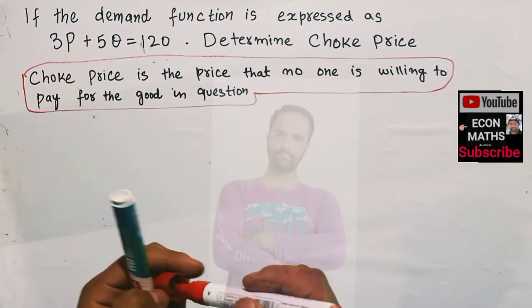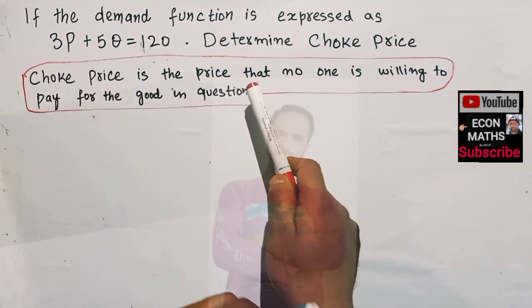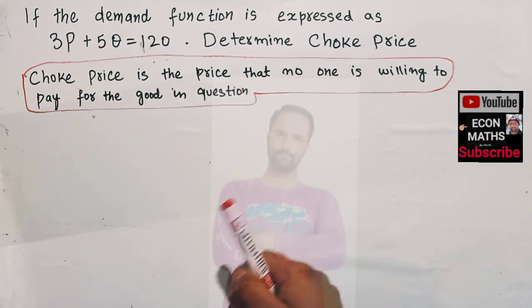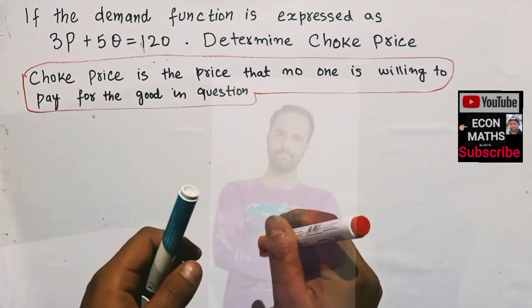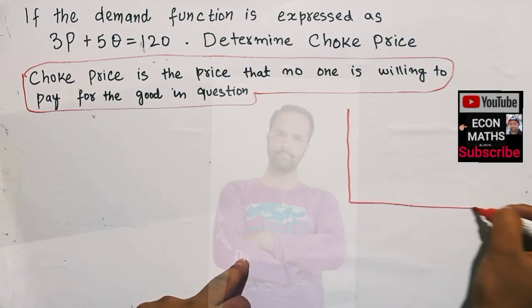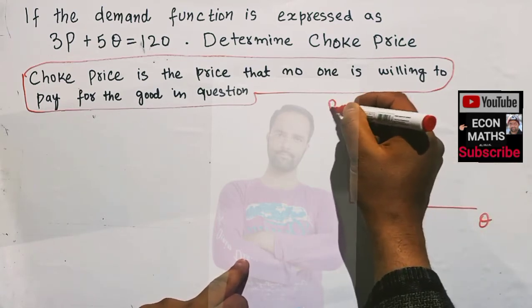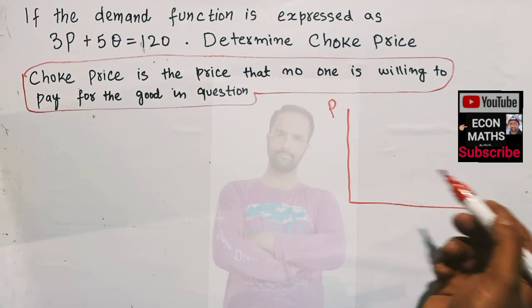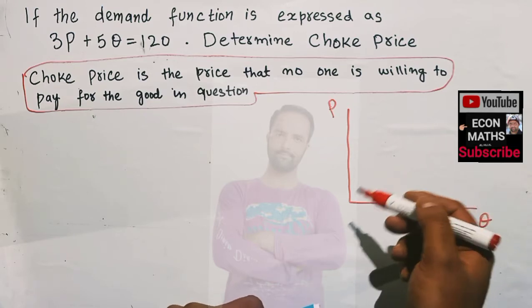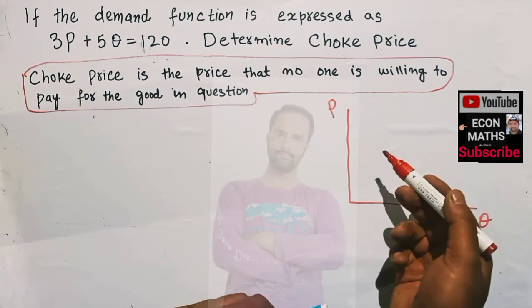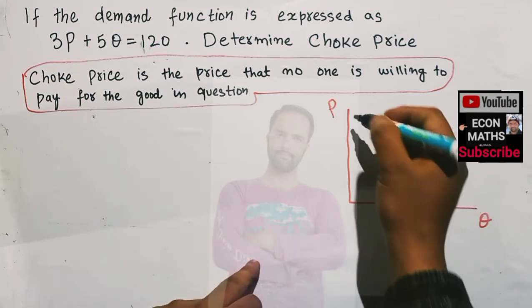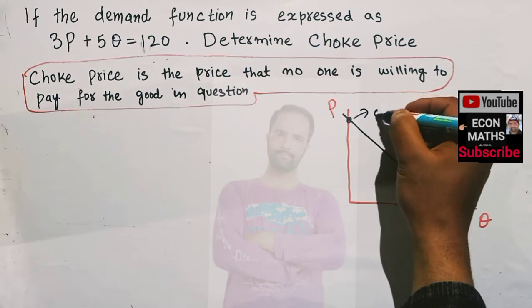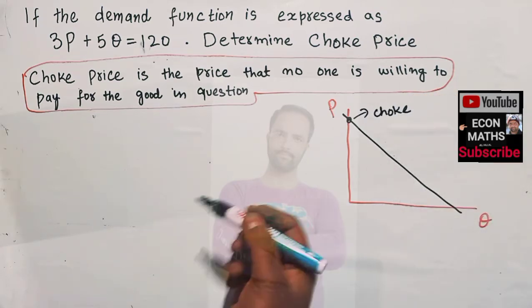The basic definition of choke price is that it is the price that no one is willing to pay for the good in question. In other words, the price at which quantity demanded equals zero is called the choke price. Graphically, if this is our quantity axis and this is our price axis, the choke price is the price at which the demand curve intersects the price axis.